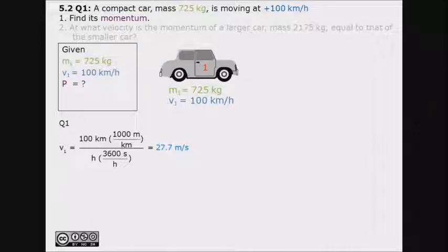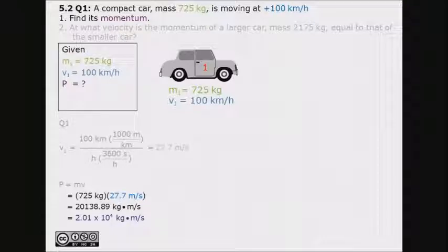To find momentum, we use the formula p equals m times v. Substitute the appropriate numbers into the equation and with proper sig figs, our answer arrives to be p equals 2.01 times 10 to the power of 4 kg times m per second.